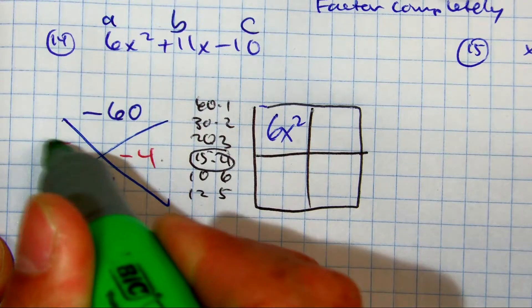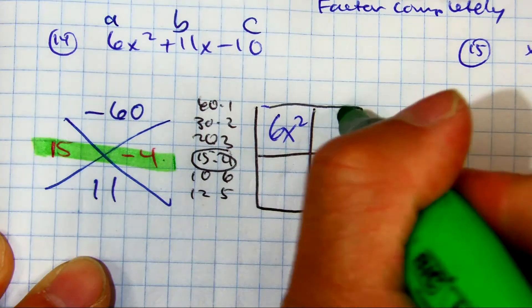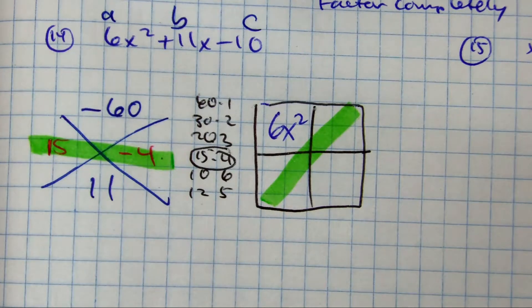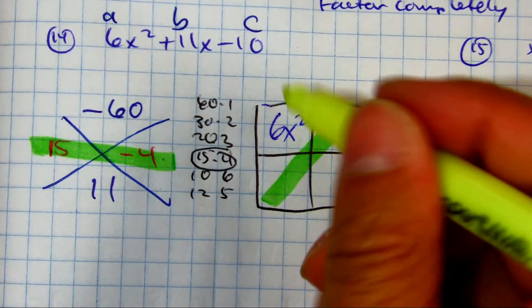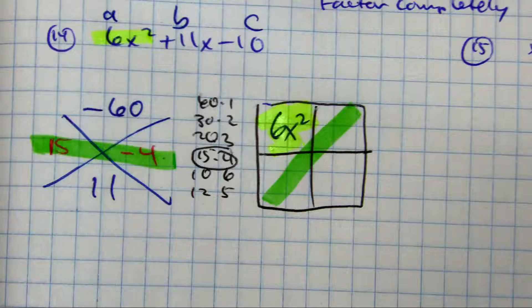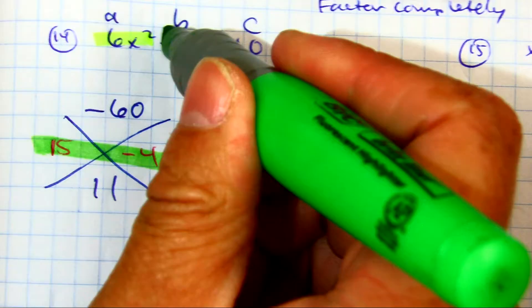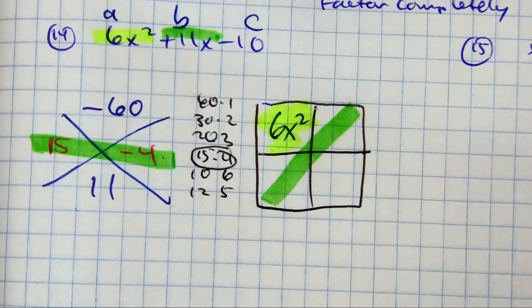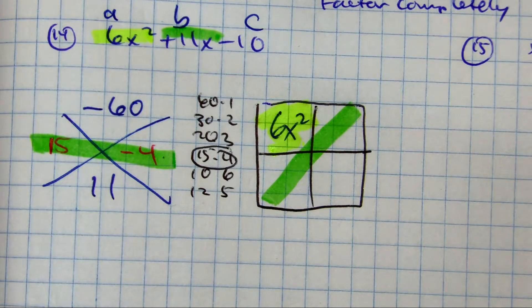Let's color code this. These two will always go in those two boxes. This yellow box will always be the first term. Because think about it. The B term is being split here. And then the last one is the C value.